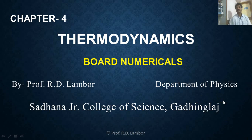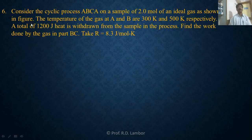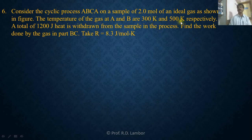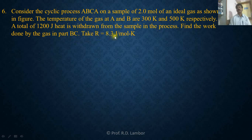Now the sixth numerical: consider the cyclic process ABCA on a sample of two moles of an ideal gas as shown in the figure. The temperature of the gas at A and B are given as 300 Kelvin and 500 Kelvin respectively. A total of 1200 joule of heat is withdrawn from the sample. Find the work done by the gas in the part BC. The value of R is equal to 8.3 joule per mole Kelvin.